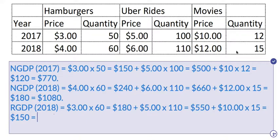So adding those up: $180 plus $550 is $730, and $730 plus $150 equals $880. You'll notice that real GDP is a lot lower than nominal GDP. The explanation is that we're using the base year's prices — we clean the inflation that took place in 2018 out of those nominal GDP figures to get a more realistic figure.